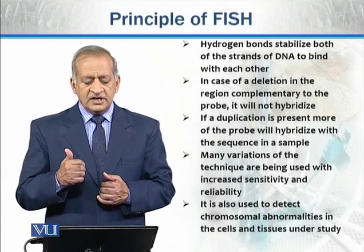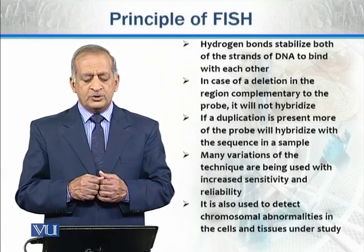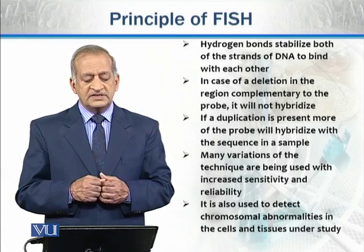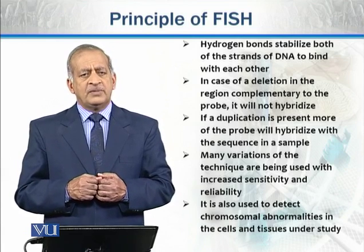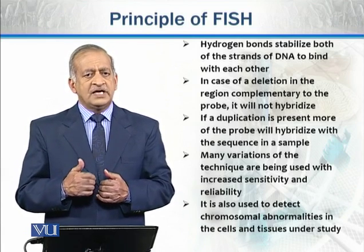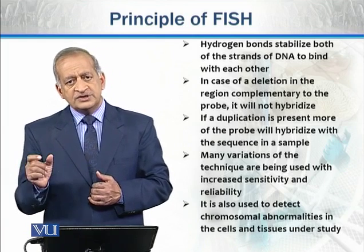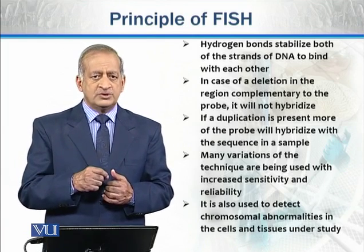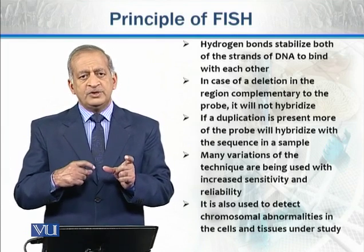If a duplication is present, more of the probe will hybridize with the sequence in the sample. In the chromosome there are changes — here is part of the genome, and then a deletion, and there is a particular sequence that is repeated.